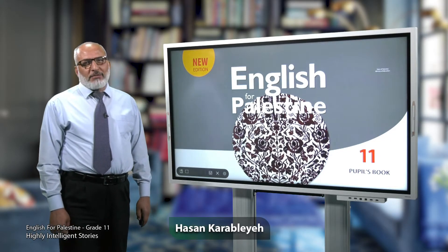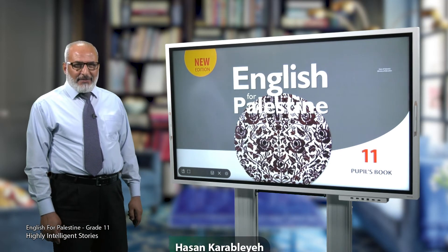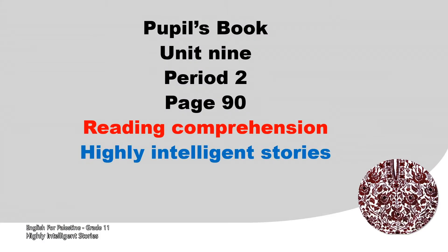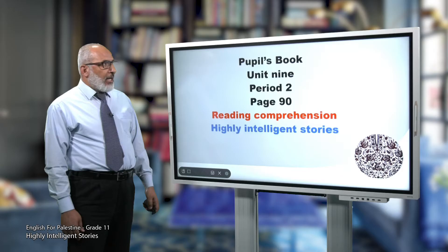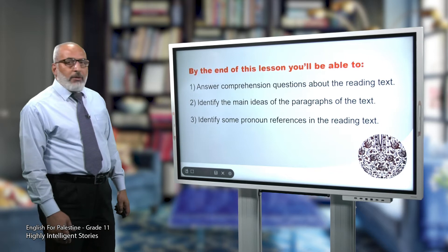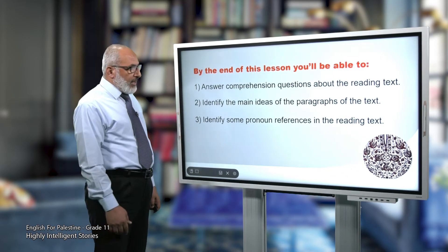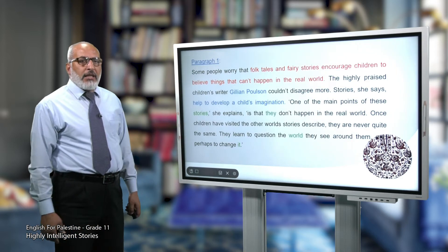Hello, dear students, and welcome to English for Palestine, Grade 11. Our lesson today is in your pupil's book, Unit 9, Period 2, page 90. It's a reading comprehension lesson about highly intelligent stories. By the end of this lesson, you will be able to: number one, answer comprehension questions about the reading text; number two, identify the main ideas of the paragraphs; and number three, identify some pronoun references in the reading text.